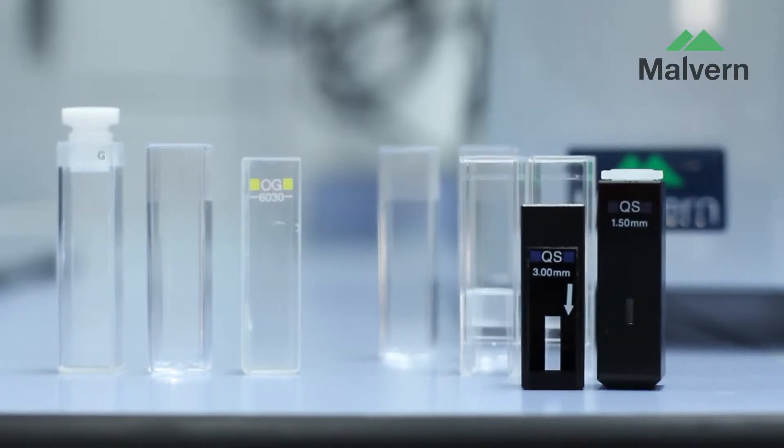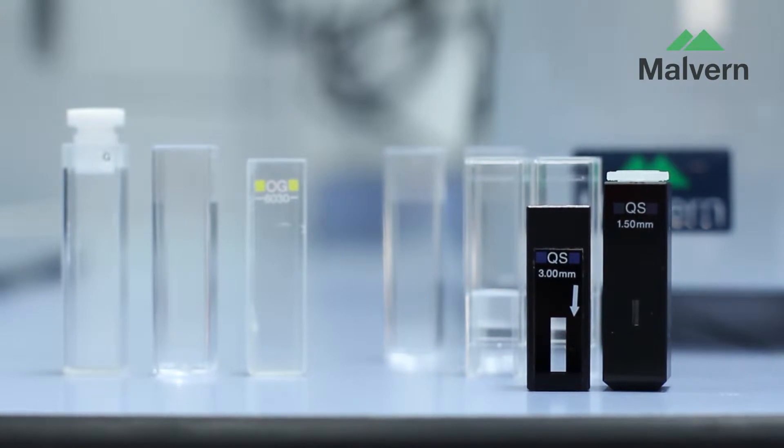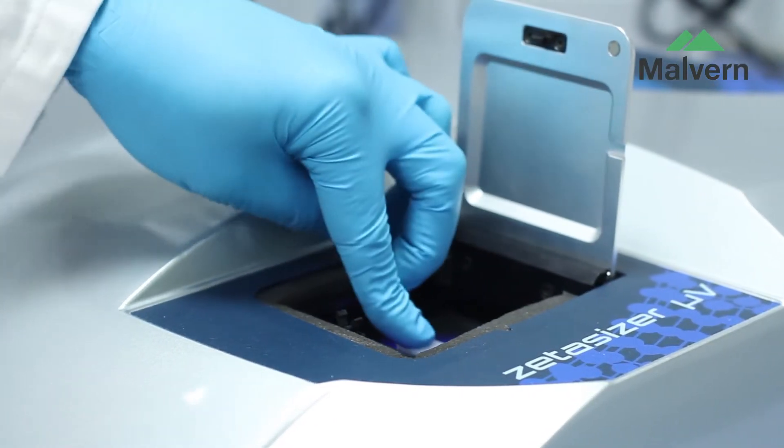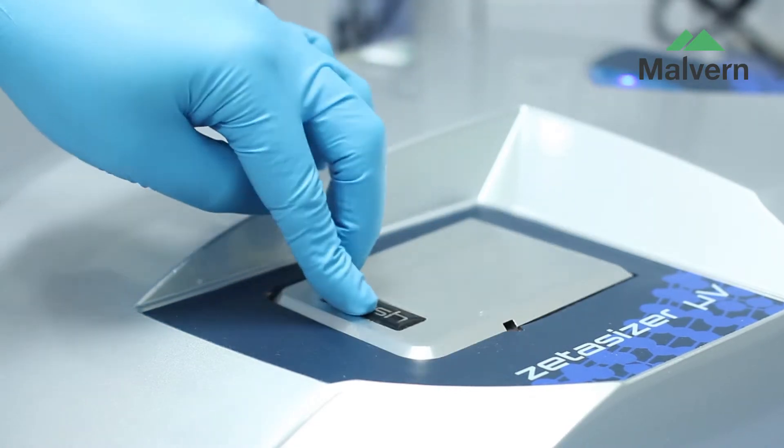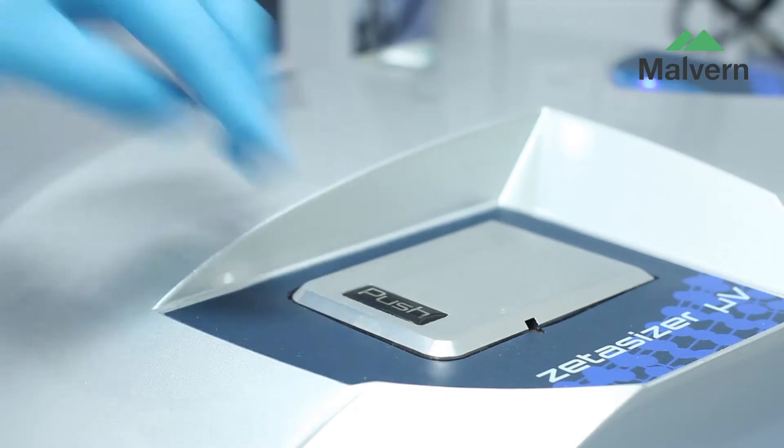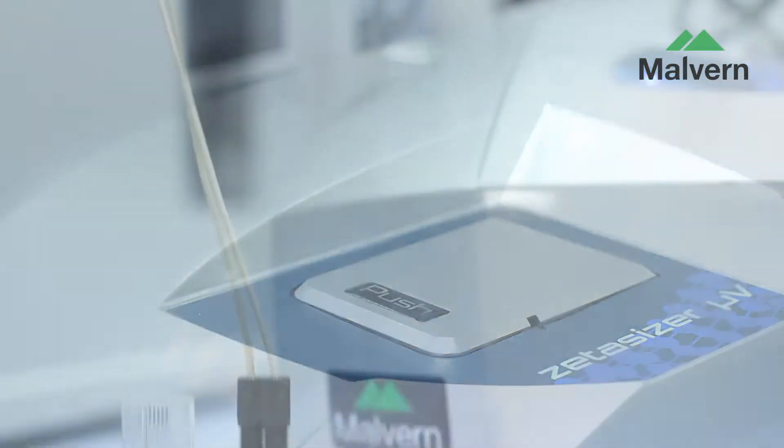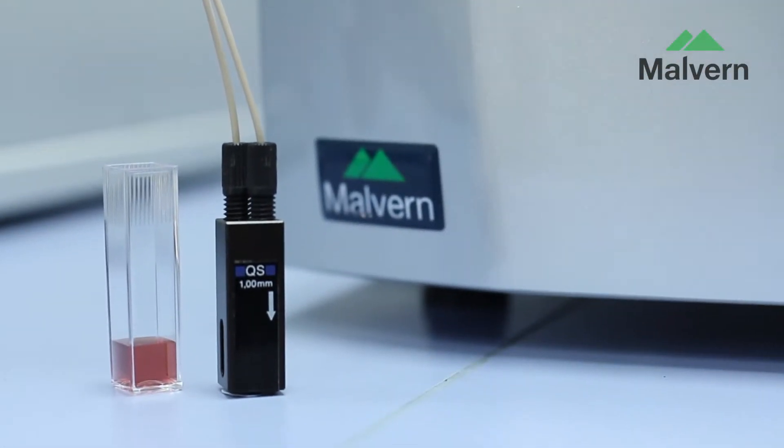For batch DLS, many cuvette types can be used in the Zetasizer Micro V, giving you flexibility over how to analyze your sample from large and small volume disposable cuvettes to high-quality quartz cells down to just 2 microliters.